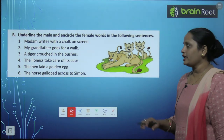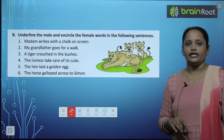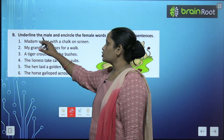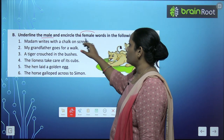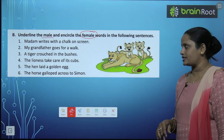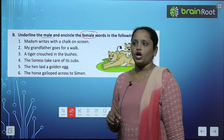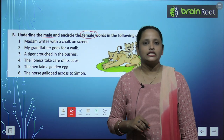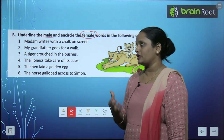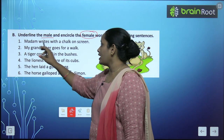Now the next exercise says: underline the male and encircle the female words. So we have to underline male words and circle female words in the following sentences. Madam writes with chalk on the screen. Here, madam is a feminine gender.